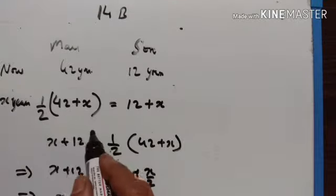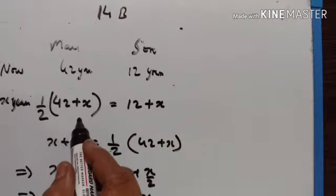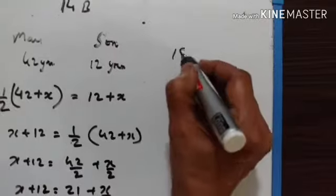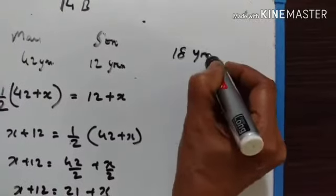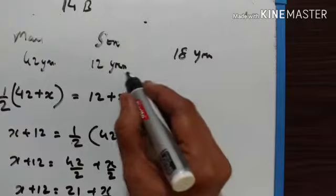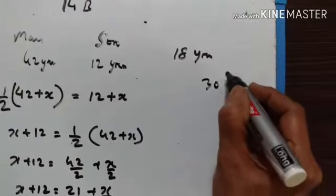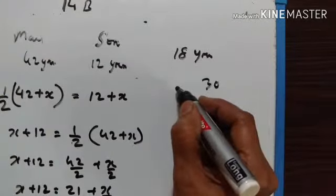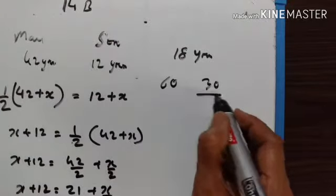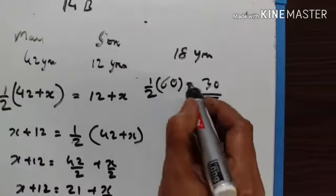So after 18 years, the son's age will be half of the age of his father. Let us verify: in 18 years the son will be 12 plus 18 equals 30, and the father will be 42 plus 18 equals 60. So the son's age, 30, is indeed half of the father's age, 60.